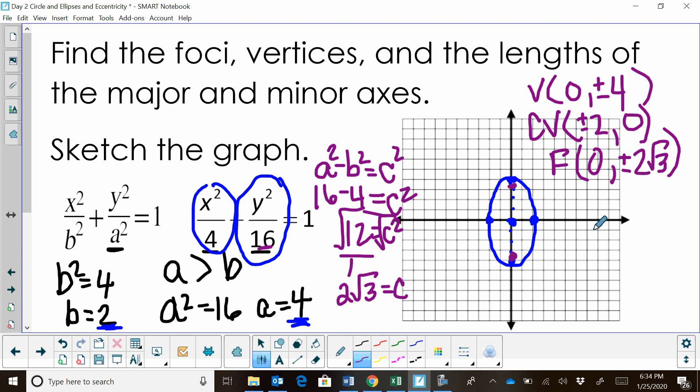The major axis is the length from vertex to vertex, so it's equal to 2a. a is 4, so 2a must be 8. That is my major axis.